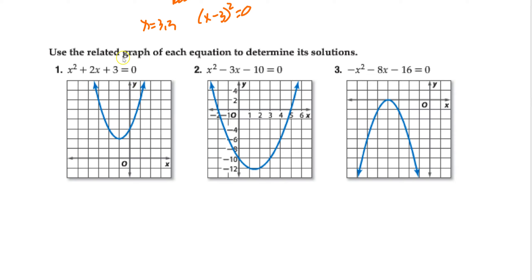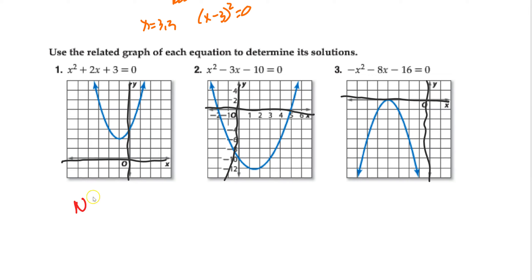On this type of problem, they want you to use a related graph of each equation to determine its solutions — like how many solutions does it have? Look at this first one here. It's kind of hard to see the x-y grid, but here's my x-axis and here's my y-axis. In this first graph, I have no x-intercept, so I have no real solutions here.